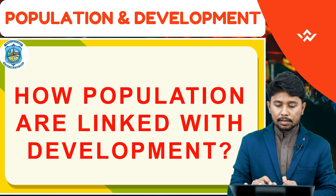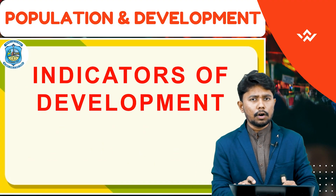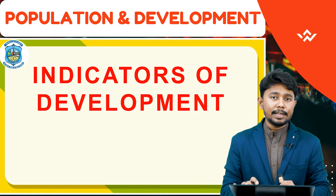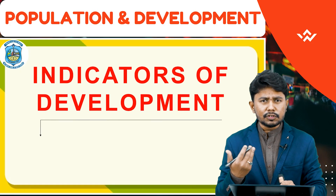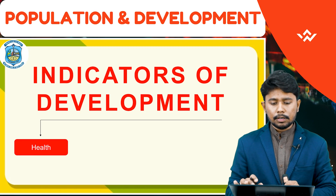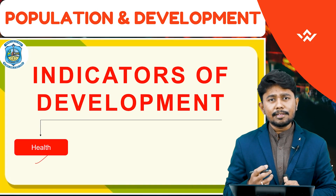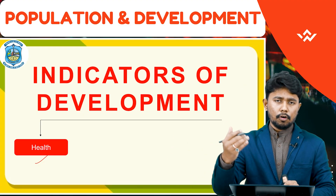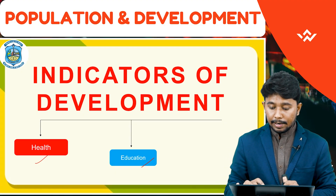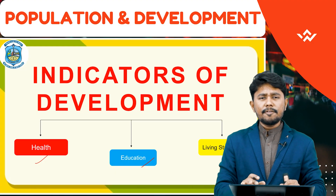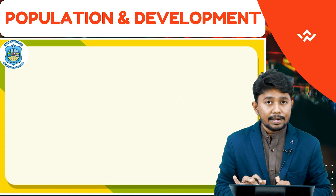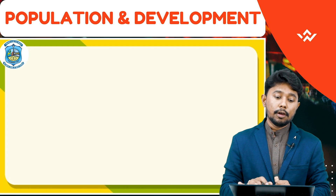But how is population linked with development? There is a close linkage between population and development. We need to understand the indicators of development. The first indicator is health, which is the major concern of any economy. The second indicator is education, and the third is the living standard. If we increase investment in these indicators, we will definitely get growth and development in the economy.